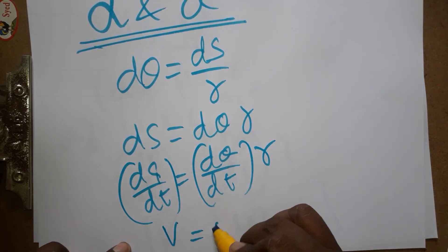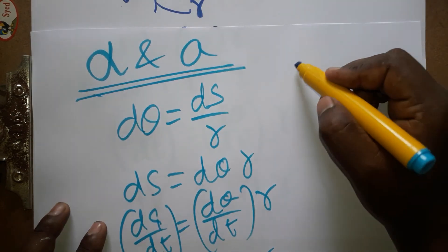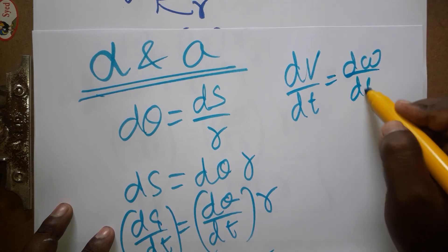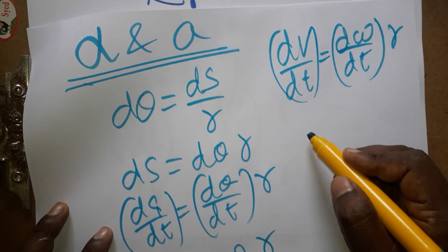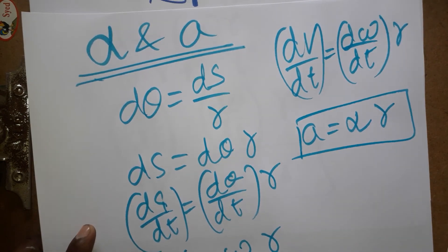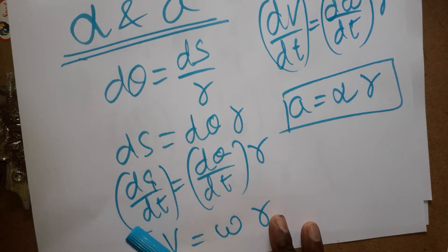Again I am going to differentiate this equation: dv/dt = dω/dt·r. So it is a and it is α and it is r. Therefore a = α·r. Thank you for watching my video, if you like my channel please subscribe.